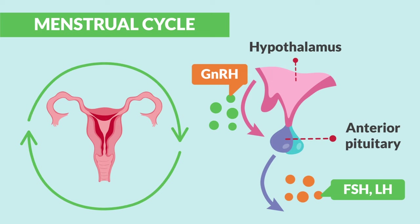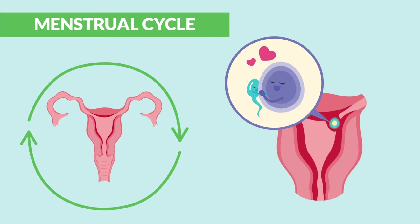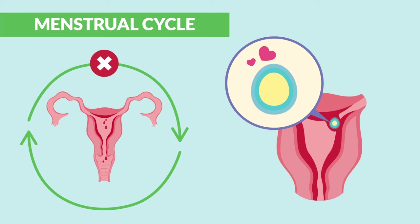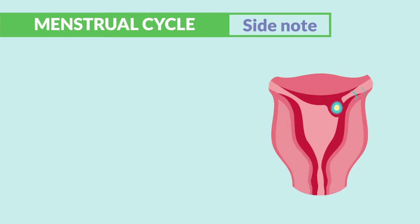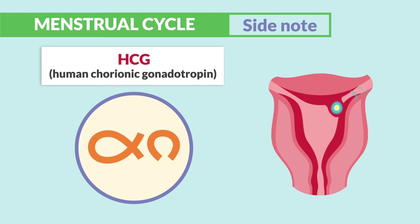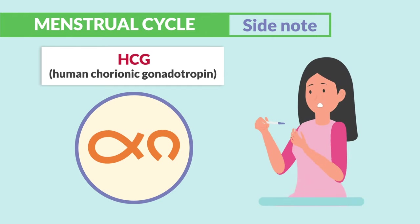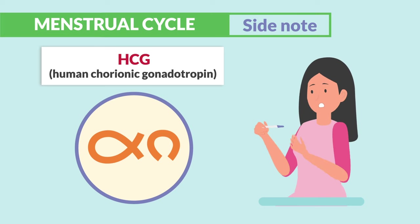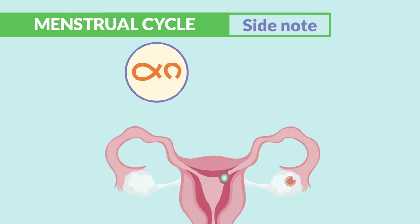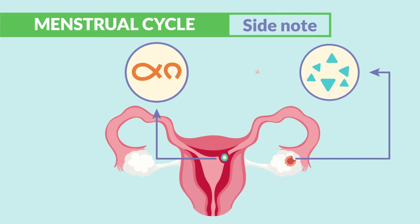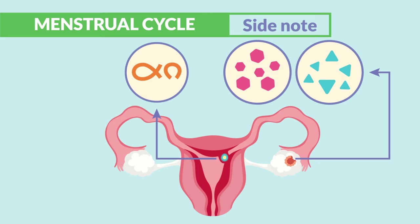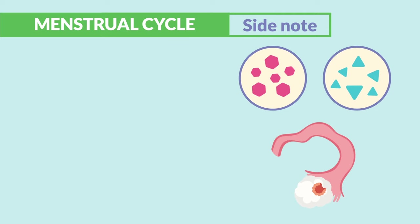If the egg is fertilized with sperm, the cycle will stop as the egg attaches to the wall of the uterus. The embryo releases HCG — human chorionic gonadotropin — which is the hormone tested during a pregnancy test. A positive test means positive for HCG. This HCG helps to keep estrogen and progesterone levels high by keeping the corpus luteum open inside the ovaries.